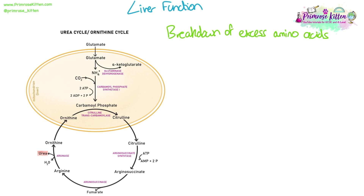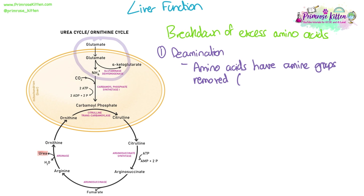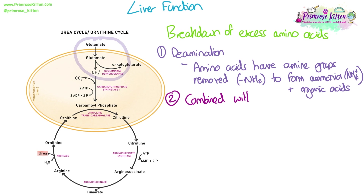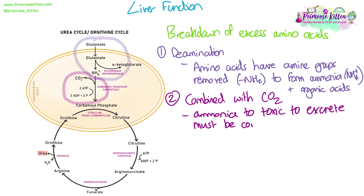The breakdown of excess amino acids in the liver. The first step is deamination, where amino acids have their amine group removed. This forms ammonia and organic acids. The organic acids are processed separately, but the ammonia enters the ornithine cycle. Ammonia must be combined with carbon dioxide in order to enter the ornithine cycle, because ammonia is too toxic to excrete directly, so the cycle converts it to urea. The ornithine cycle mostly takes place outside the mitochondria, in the cytoplasm of liver cells.